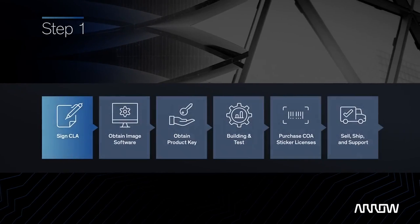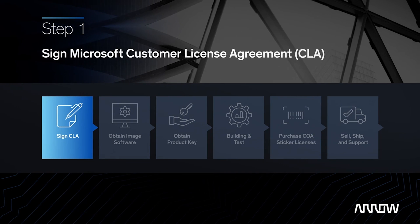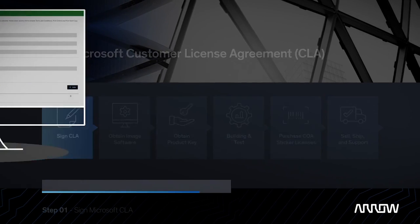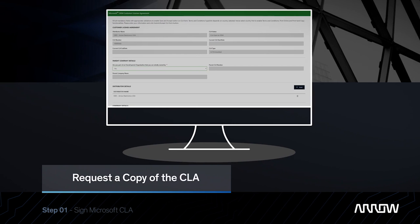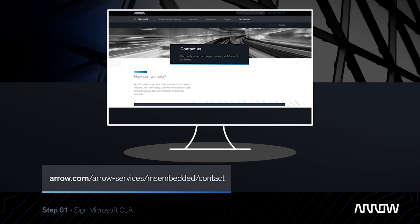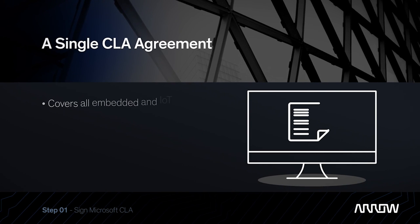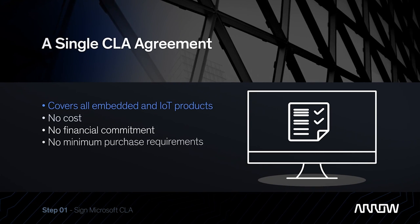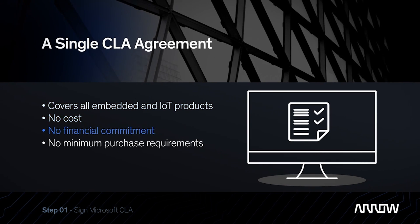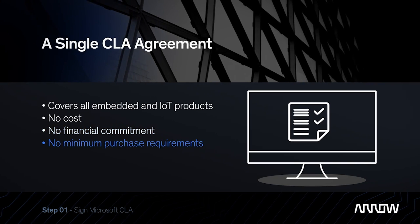First, sign a Microsoft Customer License Agreement electronically. You can request a copy of the CLA in the Microsoft Getting Started section of the Aero page. A single CLA agreement covers all embedded and IoT products. There's no cost, financial commitment, or minimum purchase requirements.